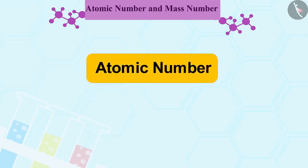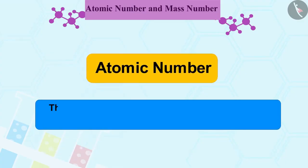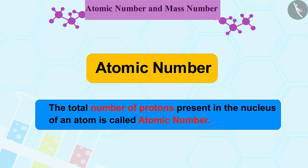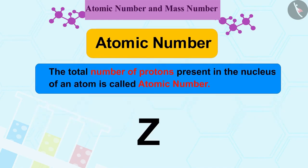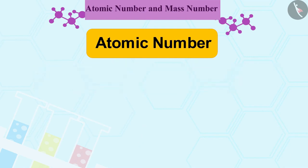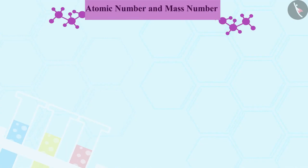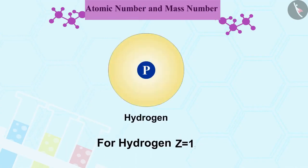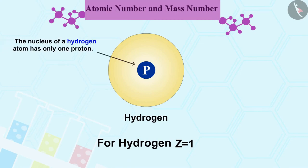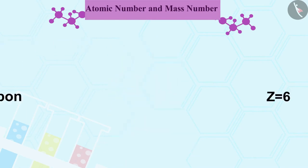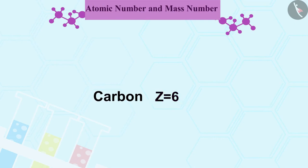Let us first learn about atomic number. The total number of protons present in the nucleus of an atom is called atomic number. It is denoted by Z. All atoms of an element have the same atomic number Z. In fact, elements are actually defined by the number of protons present in their atom. For example, Z = 1 for hydrogen because the nucleus of a hydrogen atom has only one proton. Similarly, Z = 6 for carbon.